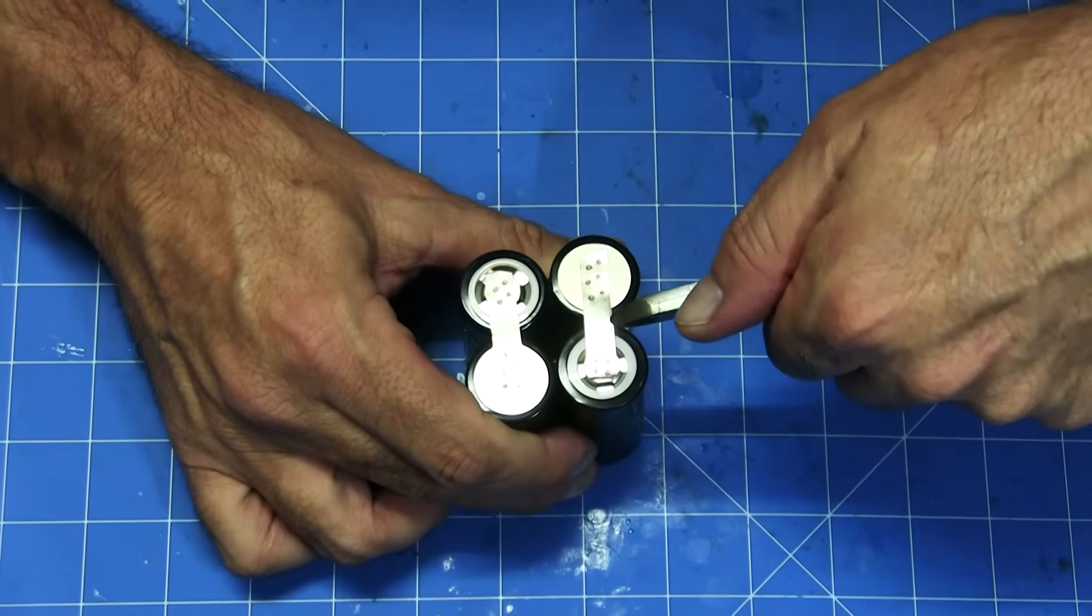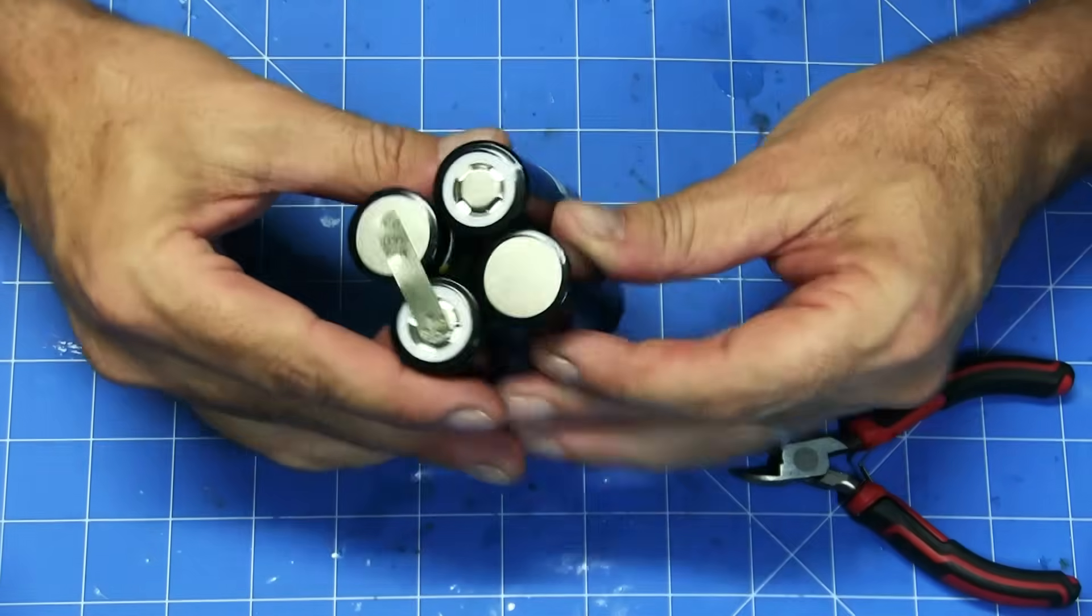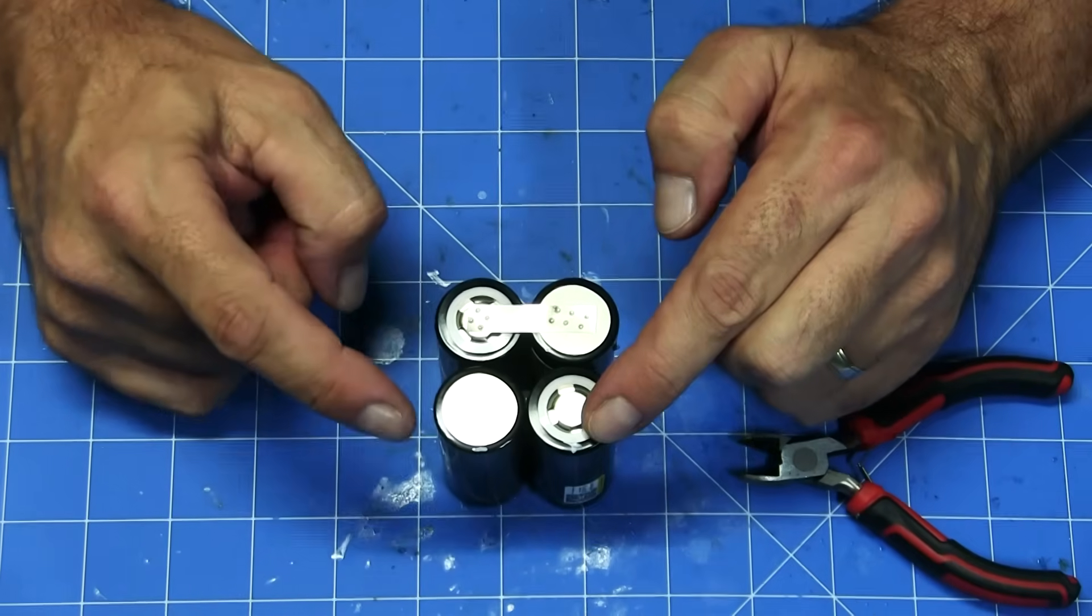Check again that your connection for your spot welds are secure. Bring the battery back in the same position again with your positive and negative in the same spot so you don't get confused. We'll go on to the next step.